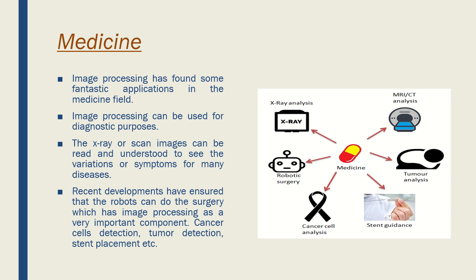Cancer and tumor analysis is another key area — when you have a report for a patient suffering from cancer or a tumor, intelligent image processing algorithms can go deeper and understand how much the cancer cells or tumor have grown. Stent guidance for heart patients, where a stent needs to be passed, is also guided through image processing and camera-related systems. All these are just highlights — there are many more, and when you go deeper into image processing it's really an ocean.